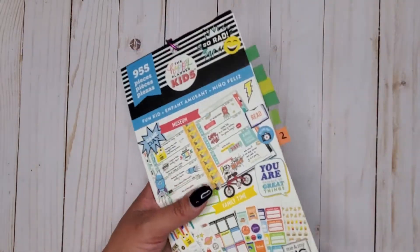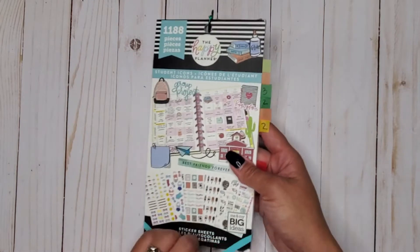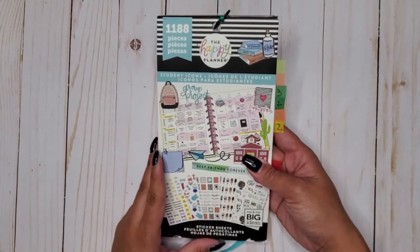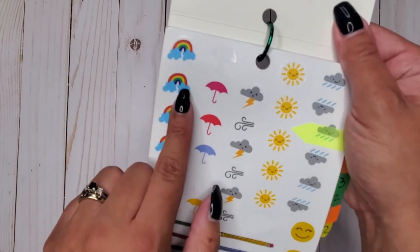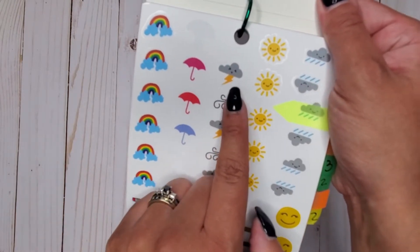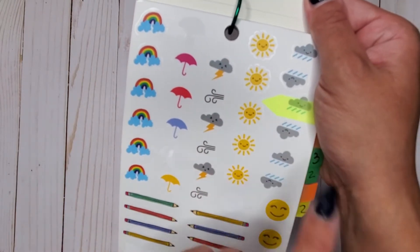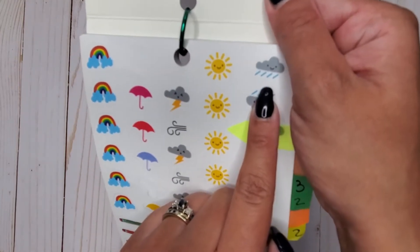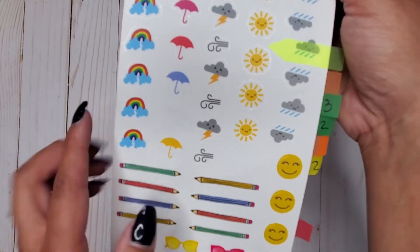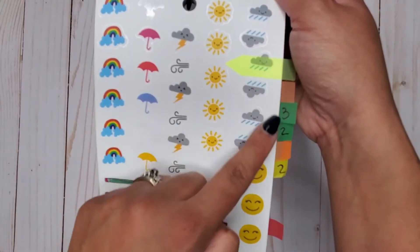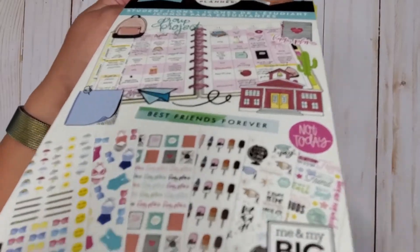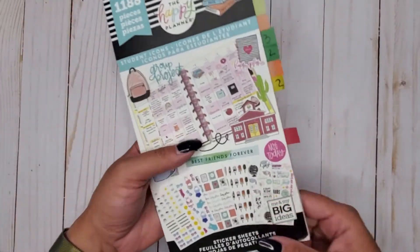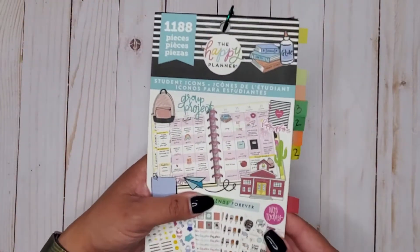Then I have student icons 1188. In here we have our little rainbow, we got some umbrellas, we have our thunderstorm, wind, our little suns, our little clouds, I think that's like rain. We just get that little section right here. So that is it for student icons 1188.